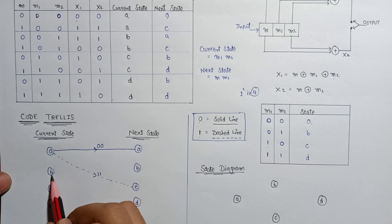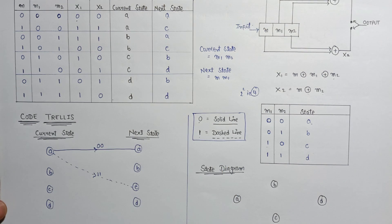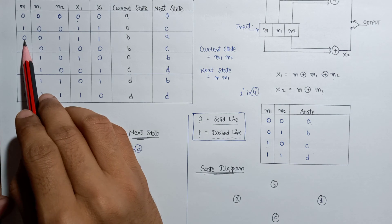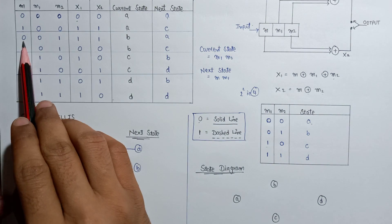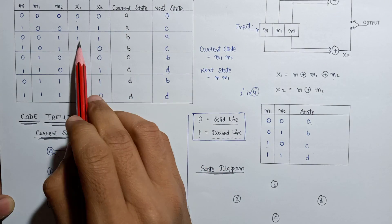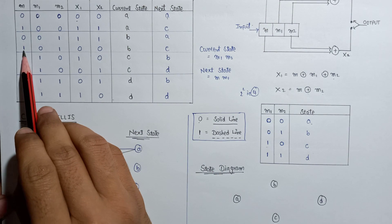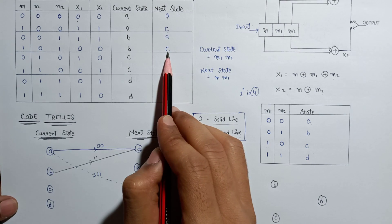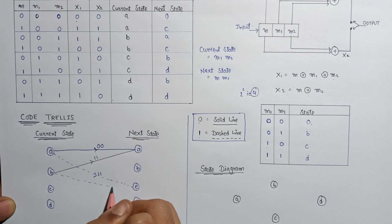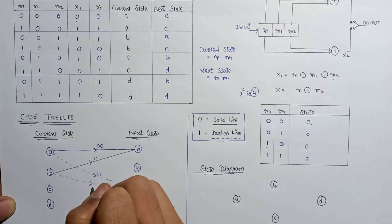Now let's draw the code trellis for state B. If the current state is B and the input message bit is 0, then the next state is A. Since it is 0, we use a solid line, and the output is 11. If the current state is B and the input message bit is 1, then the next state is C. Since it is 1, we use dashed lines, and the output is 00.